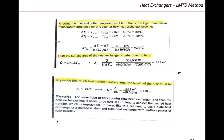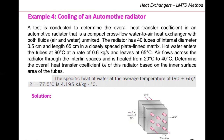The inner tube of this counterflow heat exchanger needs to be over 100 meters long to achieve the desired heat transfer, which is impractical. In cases like this, we need to use a plate heat exchanger or a multi-pass shell-and-tube heat exchanger with multiple tube bundles. So we need to design a shell-and-tube heat exchanger to make this heat transfer rate possible. I'm trying to solve each type of heat exchanger you can face with this method.